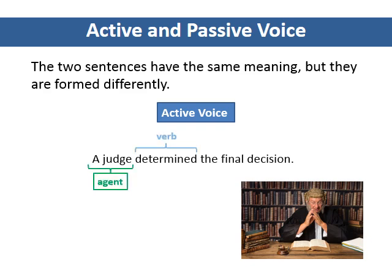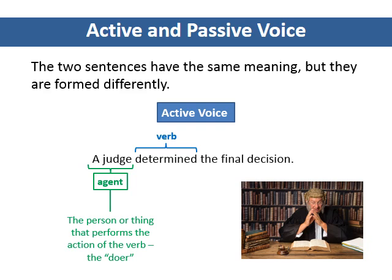When we use the active voice, the agent is the subject of the sentence. It comes before the verb. In this sentence, the subject is the judge, and the verb is determined. The agent is the person or thing that performs the action of the verb. The agent may also be called the doer of the action.